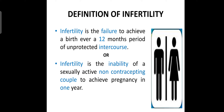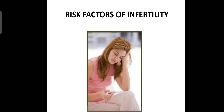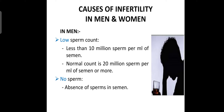Now we will study about the causes related to men. In men, the first cause of infertility is low sperm count — that is, less than 10 million sperm per ml of semen. The normal count is 20 million sperm per ml of semen or more. Absence of sperm in semen also causes infertility in men.